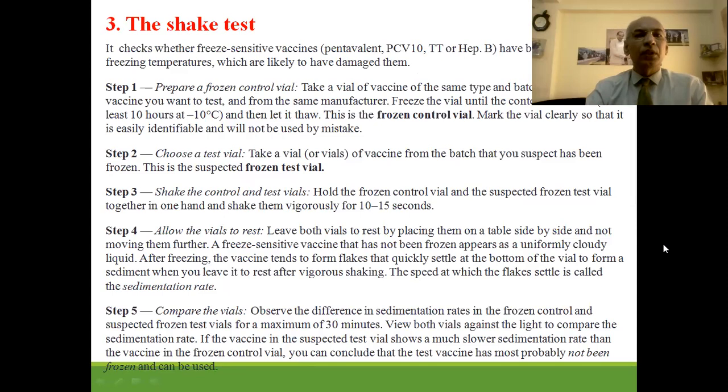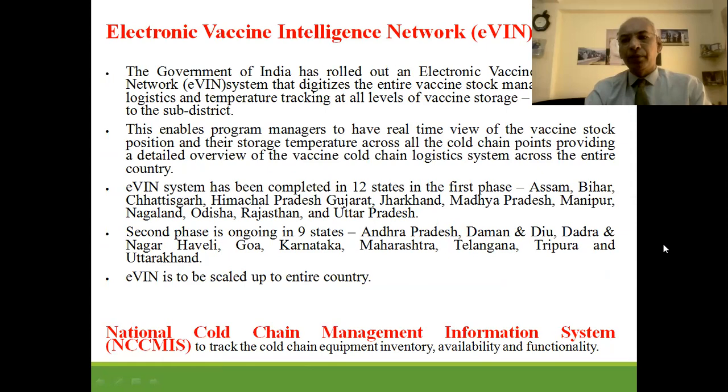The shake test is the third parameter to check vaccines. It checks whether freeze-sensitive vaccines like pentavalent, pneumococcal, TT, or hepatitis have been subjected to freezing. Steps: prepare a frozen control vial, choose a test vial, shake both for 15 seconds, allow them to rest, then compare the vials for 30 minutes. These three parameters — VVM, freeze indicator, and shake test — together assess vaccine potency.